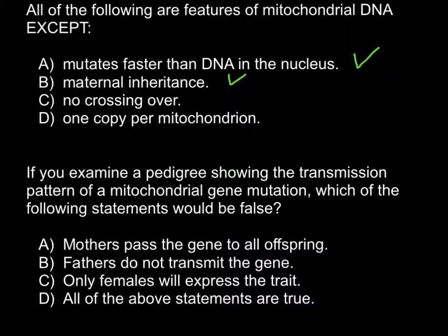Answer C: no crossing over — this is also true, because mitochondrial DNA is a circular DNA, just like in bacteria, and there is no crossing over during this process.